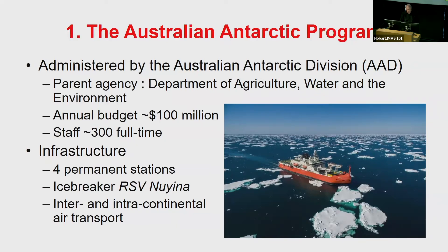We have four permanent stations: Mawson, Davis, Casey, and Macquarie Island, which we intend to keep operating into the future. With our new intercontinental and intracontinental air transport capability, plus the ship venturing further into the Antarctic, we'll be trying to get over as much of the continent as possible.